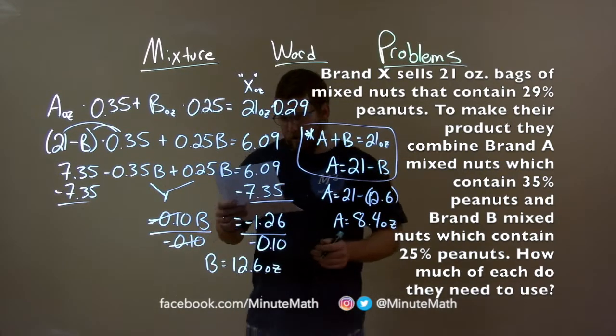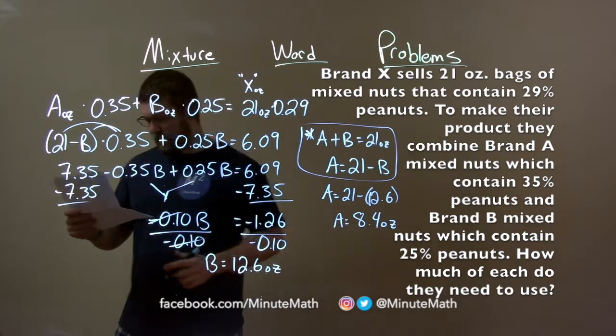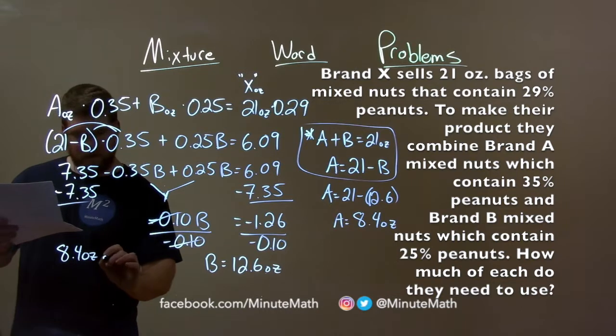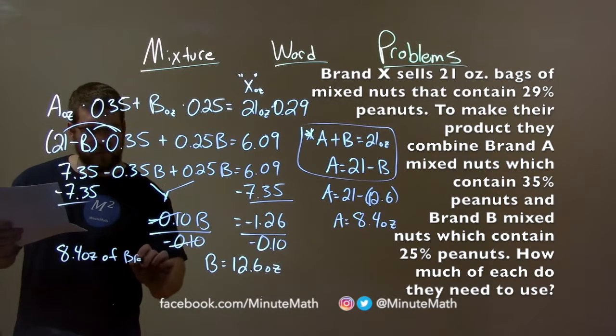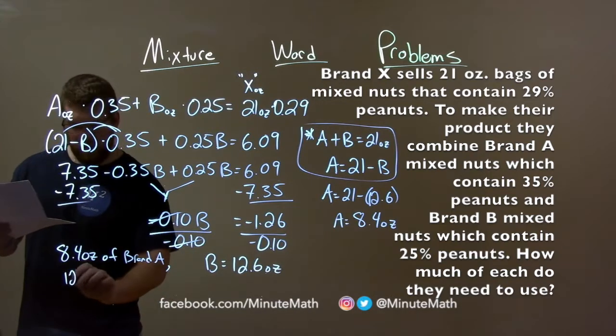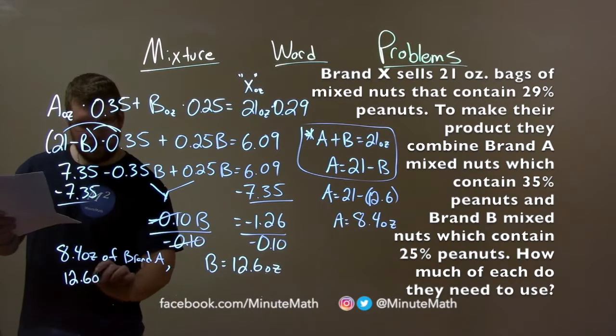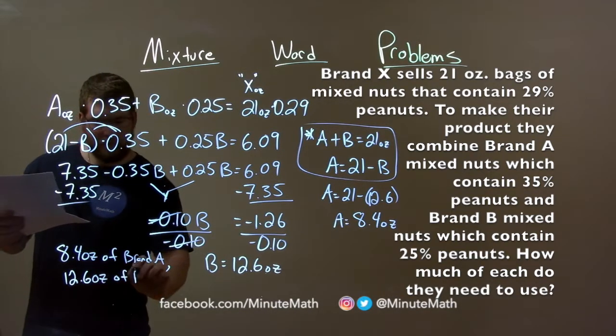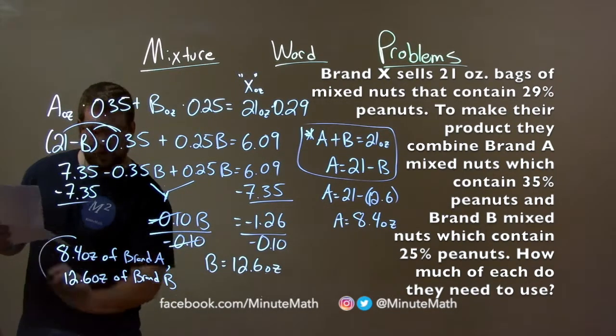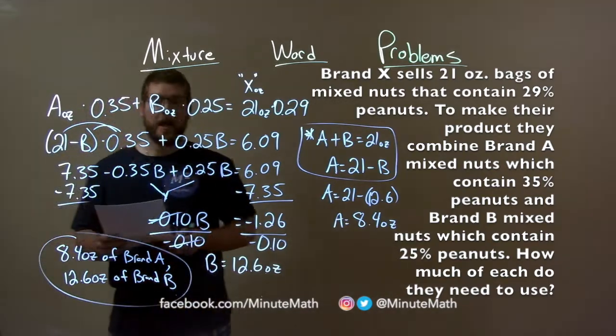And so, our final answer, by combining everything, we have 8.4 ounces of brand A and 12.6 ounces of brand B. And there is our final answer.